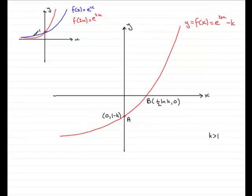If you took this point here, it moves in halfway across towards the y axis. So it gets squashed in by scale factor of a half. So the red graph then is f of 2x, e to the 2x.